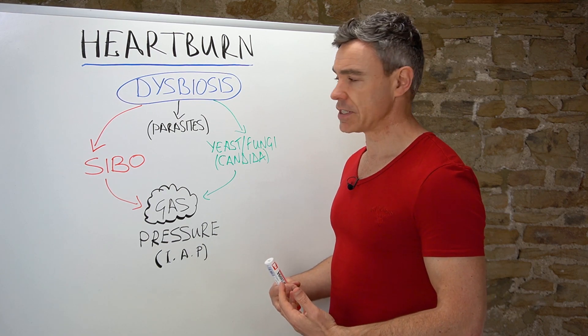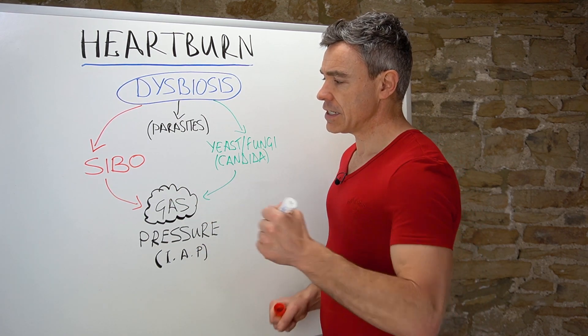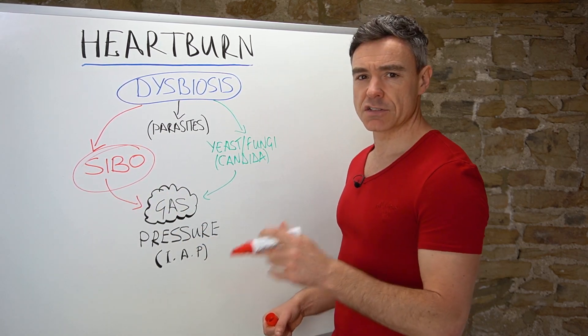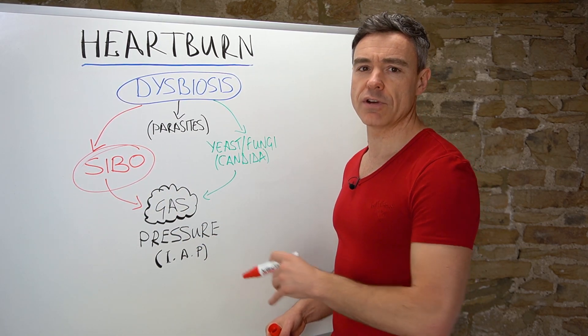Number one is this concept of SIBO, and that means small intestinal bacterial overgrowth.